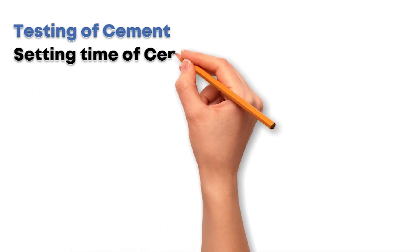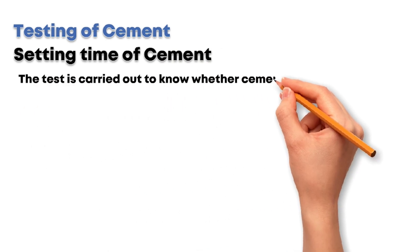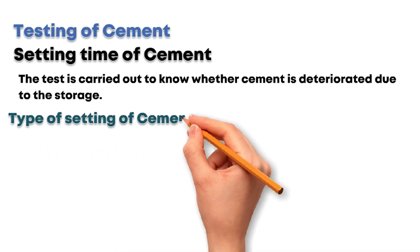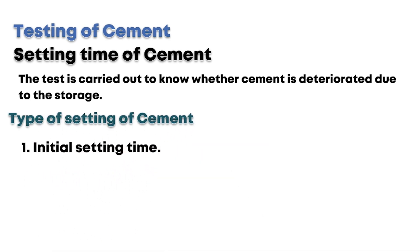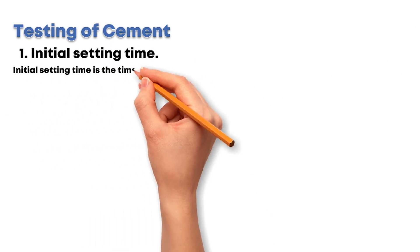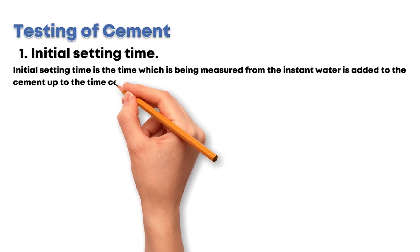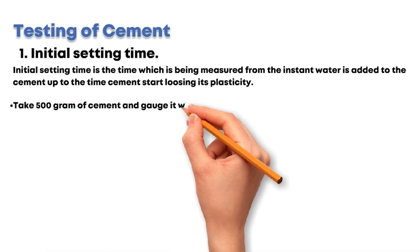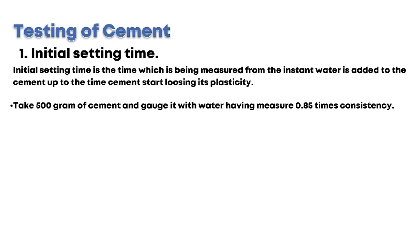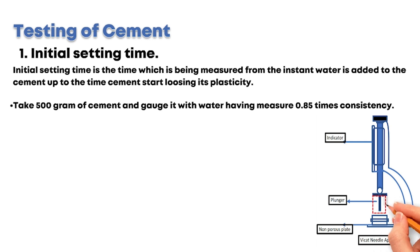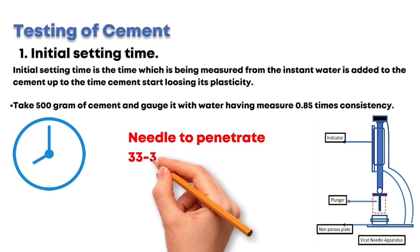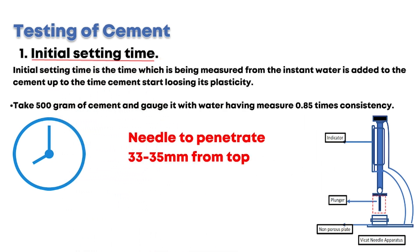Now let's talk about the setting time test on the cement. The test is carried out to know whether cement has deteriorated due to storage. Two setting times are associated with the setting of cement: initial setting time and final setting time. Initial setting time is the time measured from the instant water is added to the cement up to the time cement starts losing its plasticity. Take 500g of cement and gauge it with water measured at 0.85 times consistency. Lower the square needle gently and release it quickly. Note the time required by the needle to penetrate 33 to 35 mm from the top. This time is called the initial setting time.